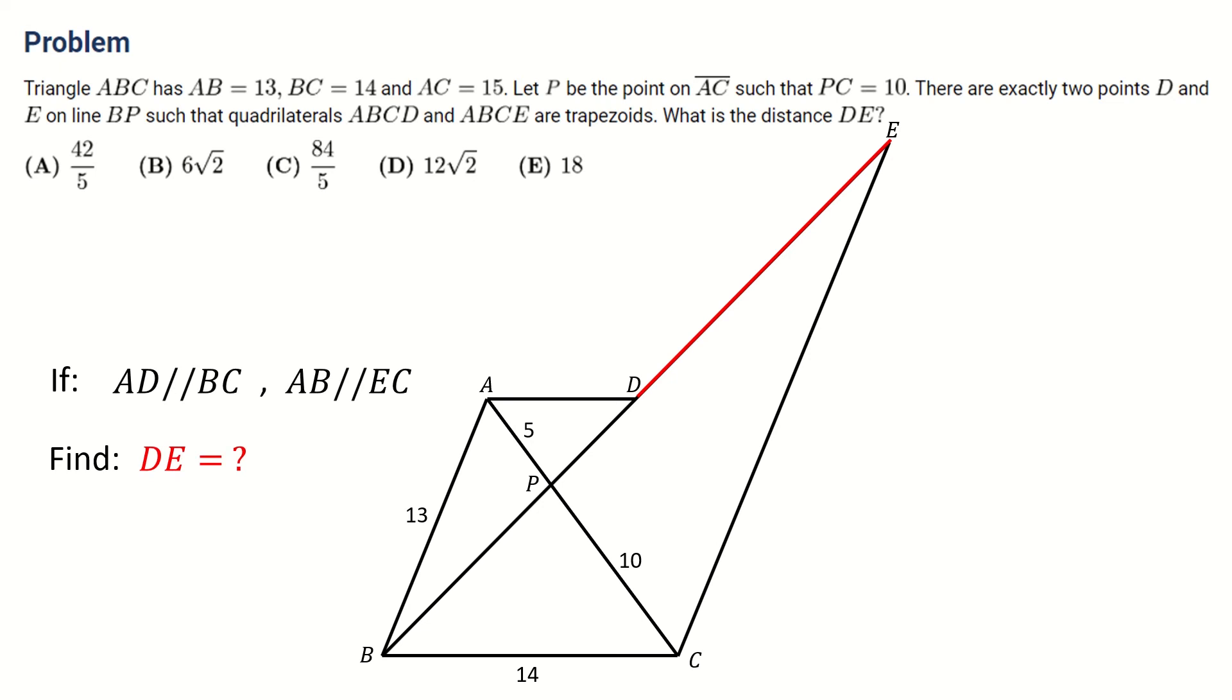In short, we are given AD is parallel to BC, and AB is parallel to EC. We want to find the length of DE. You can pause this video and give it a try. When you are ready, keep watching to see the solution.